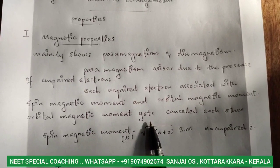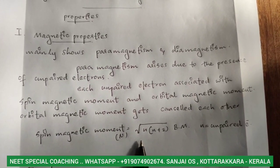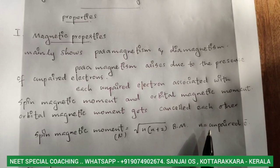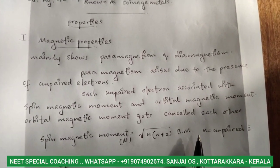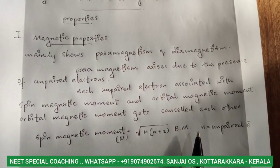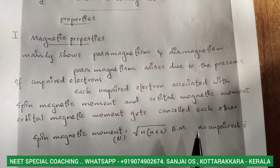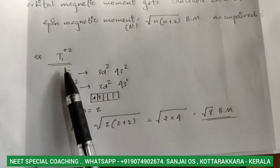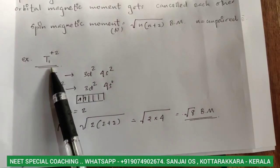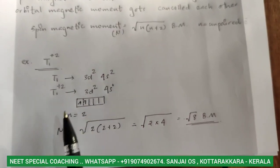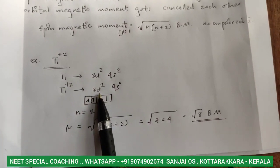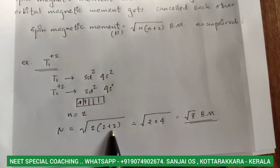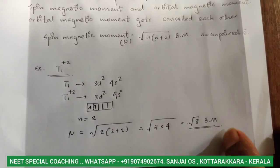This is a D-Block element. The configuration is 3d to 4s⁰, which means there are unpaired electrons in 3d, so n is equal to 1. Mu is equal to root of n into n plus 2, which gives root of 2 into 4, root 8. This means we have a magnetic moment, so the element is paramagnetic.